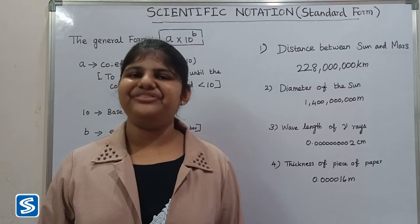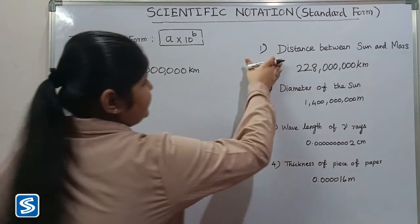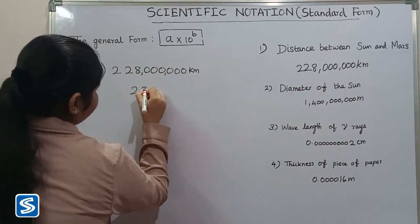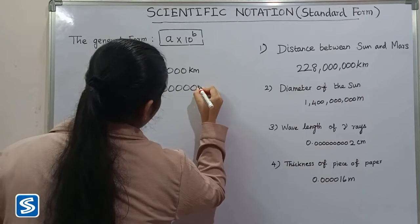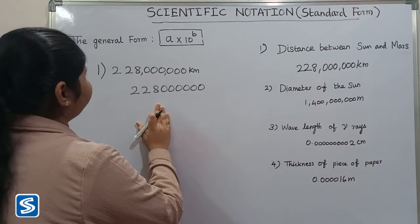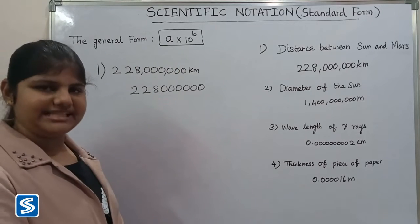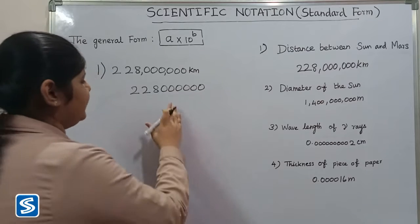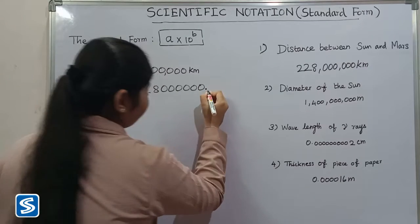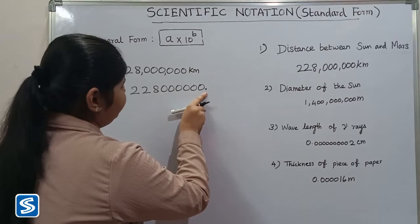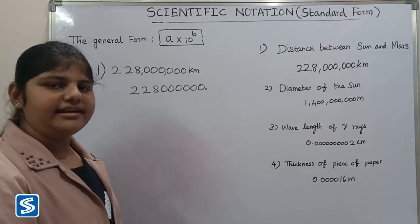Now we will look at scientific notation for large numbers. For example, we take the distance between the Sun and Mars. To find the a value, first we find the location of the decimal point. This is a whole number, so the decimal point is always at the end of the number. Now we move the decimal point until the coefficient is greater than or equal to 1 and less than 10.